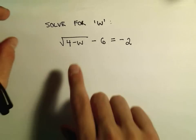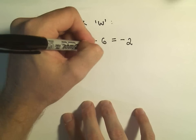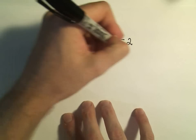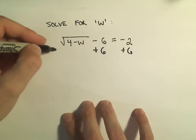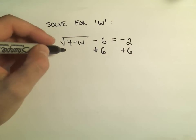Again, the first thing you want to do is just get the radical by itself. That's really almost always the best thing to do. So I'm going to add 6 to both sides.